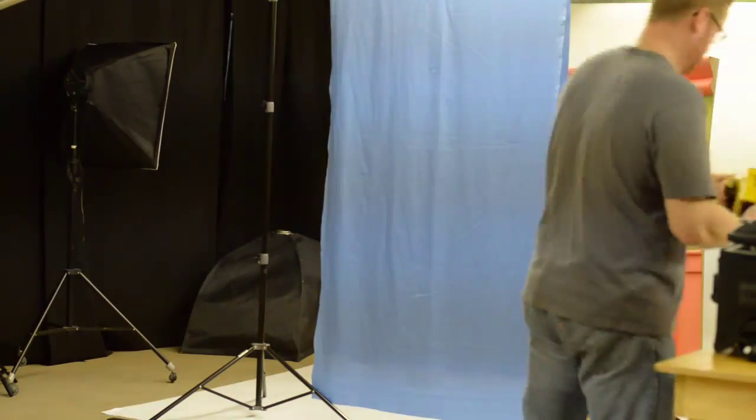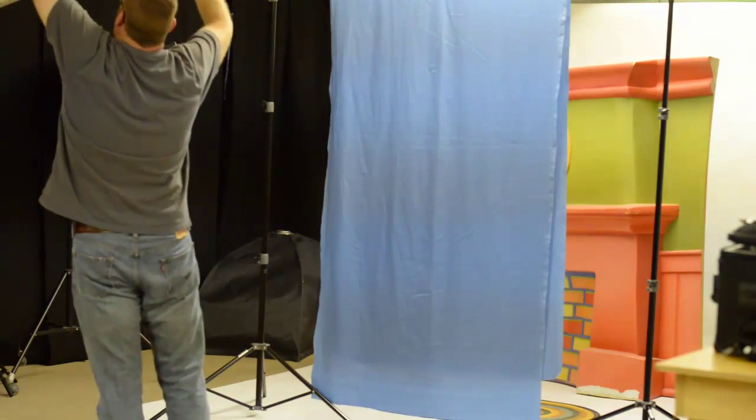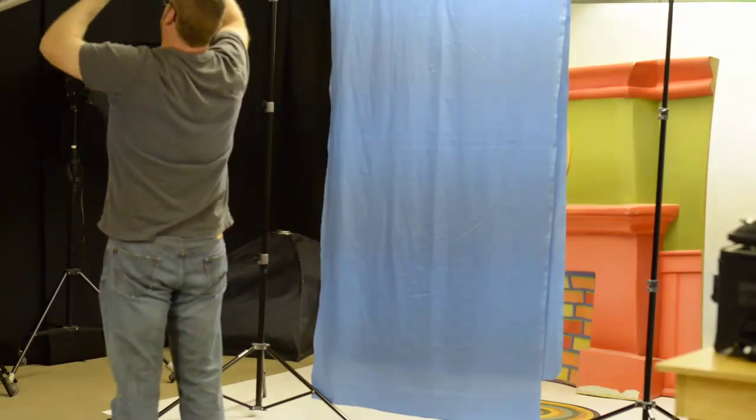Up there we have a boom from the studio that we use for the beauty dish. Those really work great to get the pole away from the model so it's not in the frame.